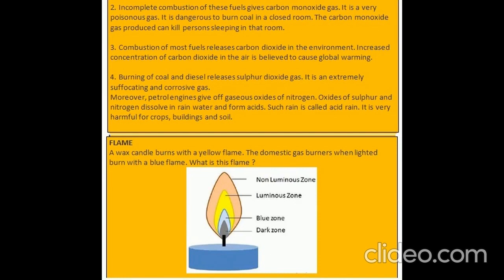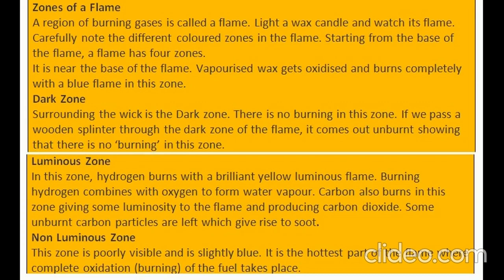Flame: a wax candle burns with a yellow flame while domestic gas burners burn with a blue flame. A region of burning gases is called a flame. A flame has four zones starting from the base: the blue zone near the base where vaporized wax gets oxidized and burns completely; the dark zone surrounding the wick where there is no burning; the luminous zone where hydrogen burns with a brilliant yellow luminous flame and carbon also burns giving luminosity and producing carbon dioxide, with some unburned carbon particles giving rise to soot; and the non-luminous zone which is the hottest part where complete oxidation of the fuel takes place.